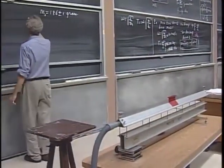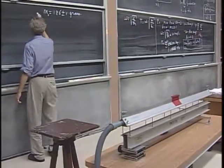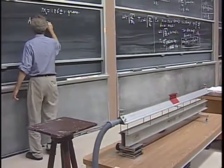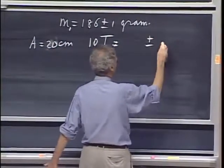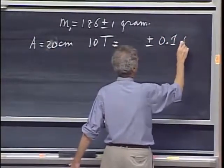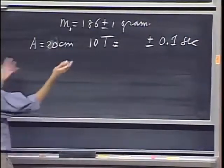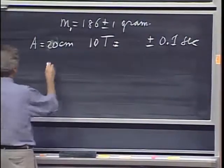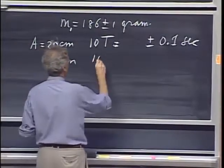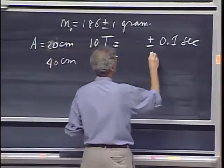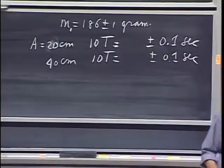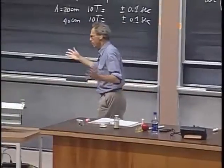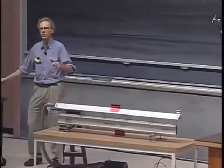So I'm going to do it at an amplitude which is 15 centimeters. Let's make it 20 centimeters. So I get 10T, I get a certain number, and I get an error, which is my reaction error, which is about a tenth of a second. That's about the reaction error that we all have, roughly. Then I will do it at 40 centimeters. We get a 10T, and again, plus or minus 0.1 seconds. And we'll see how much they differ. They should be the same if this is an ideal spring within the uncertainty of my measurements.